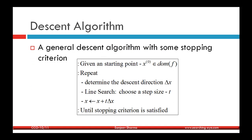Here is the general descent algorithm with a stopping criterion. Given an initial starting point in the domain of the function, repeat until convergence or until the stopping criterion is satisfied: determine the descent direction Δx, then using line search algorithms choose a step size t to move in direction Δx, then update x ← x + t·Δx. We will now analyze the line search methods to find this step length.